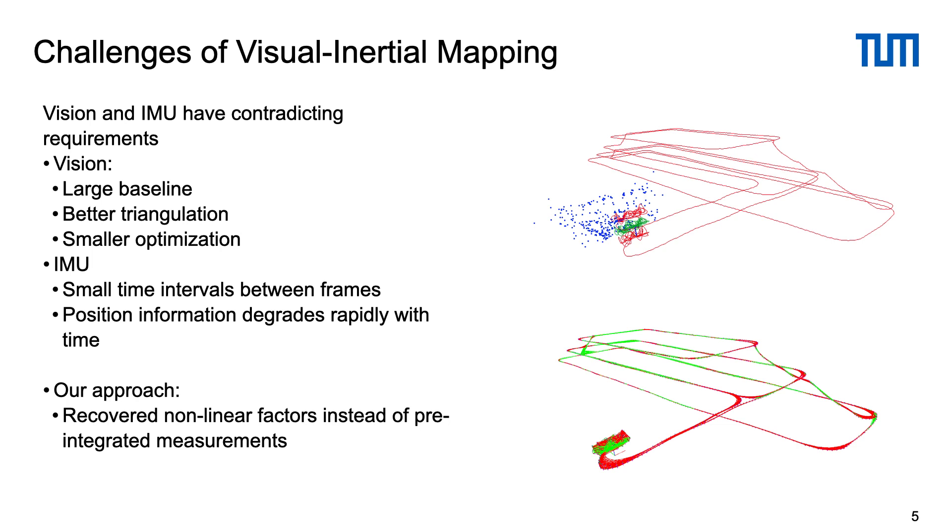We propose a new approach that combines IMU and short-term visual information into non-linear factors extracted from the VIO, which is the first layer of our system. These factors are then used to make a globally consistent gravity aligned map in the VIO mapping, which is the second layer of our system.